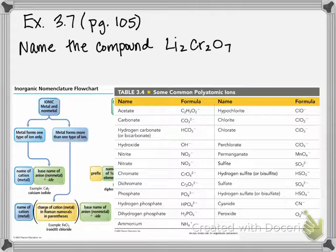This is example 3.7 on page 105 of your textbook. Here they're asking us to name the compound Li₂Cr₂O₇. So remember, first thing we need to do is figure out if this is ionic or molecular.